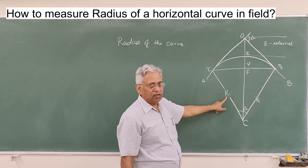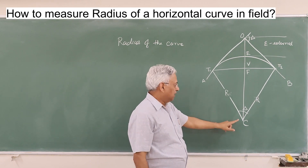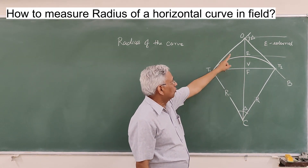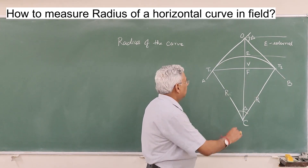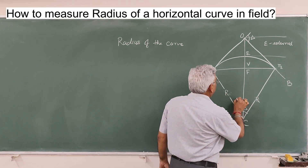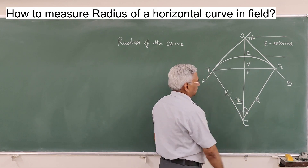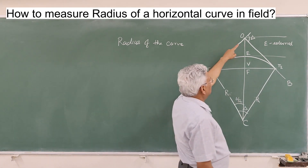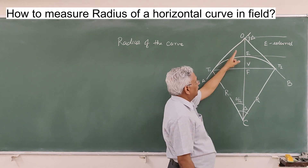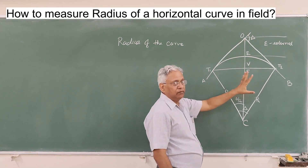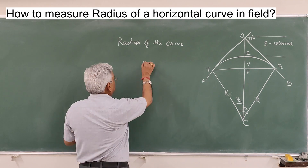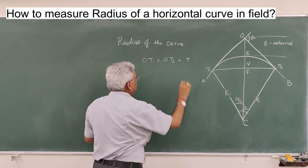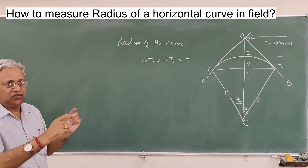R is the radius of the circular curve, C is the center, and this is the deflection angle. If we join point C with O, it will divide this into two equal parts. Because O is the point from where T1 and T2 are drawn, O-T1 and O-T2 are the tangent lengths, so their length will be equal. That is the property: O-T1 is equal to O-T2, and let us say this tangent length is T.